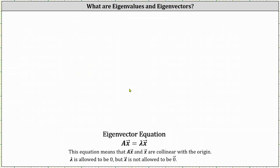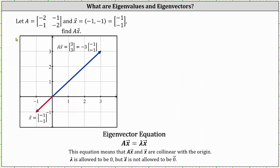Let's take a look at two more examples. Looking at a different matrix A and a different vector X, let's calculate matrix A times vector X, which is equal to the vector [3, 3]. The vector [3, 3] is a scalar multiple of the vector [-1, -1], since negative three times the vector [-1, -1] equals the vector [3, 3]. We can see from the graph the two vectors are collinear with the origin as well as parallel. And therefore, lambda equals negative three is an eigenvalue of matrix A, and vector X, the vector [-1, -1], is an eigenvector corresponding to lambda equals negative three.